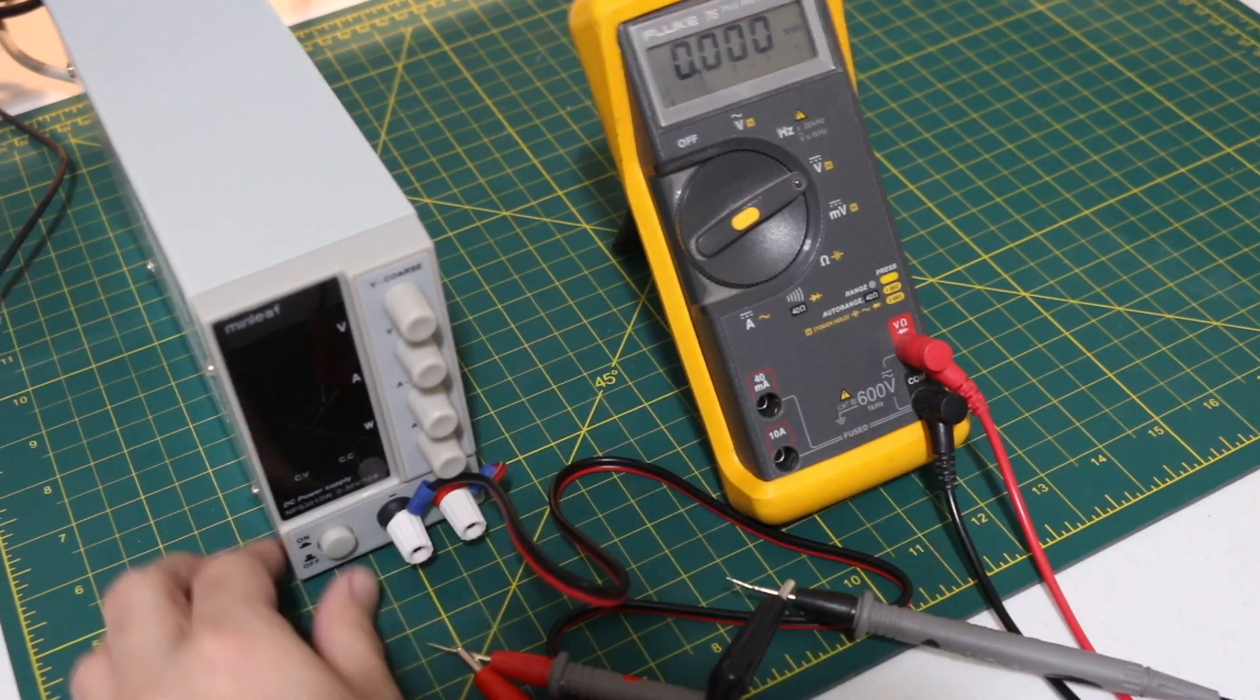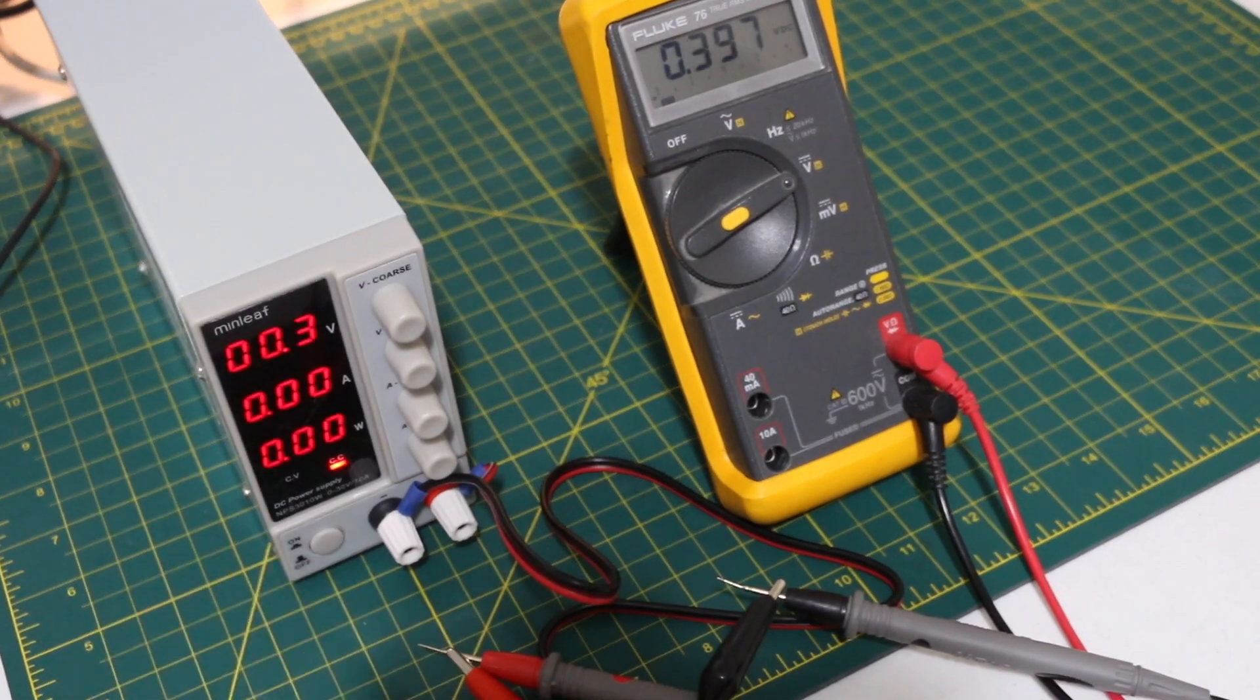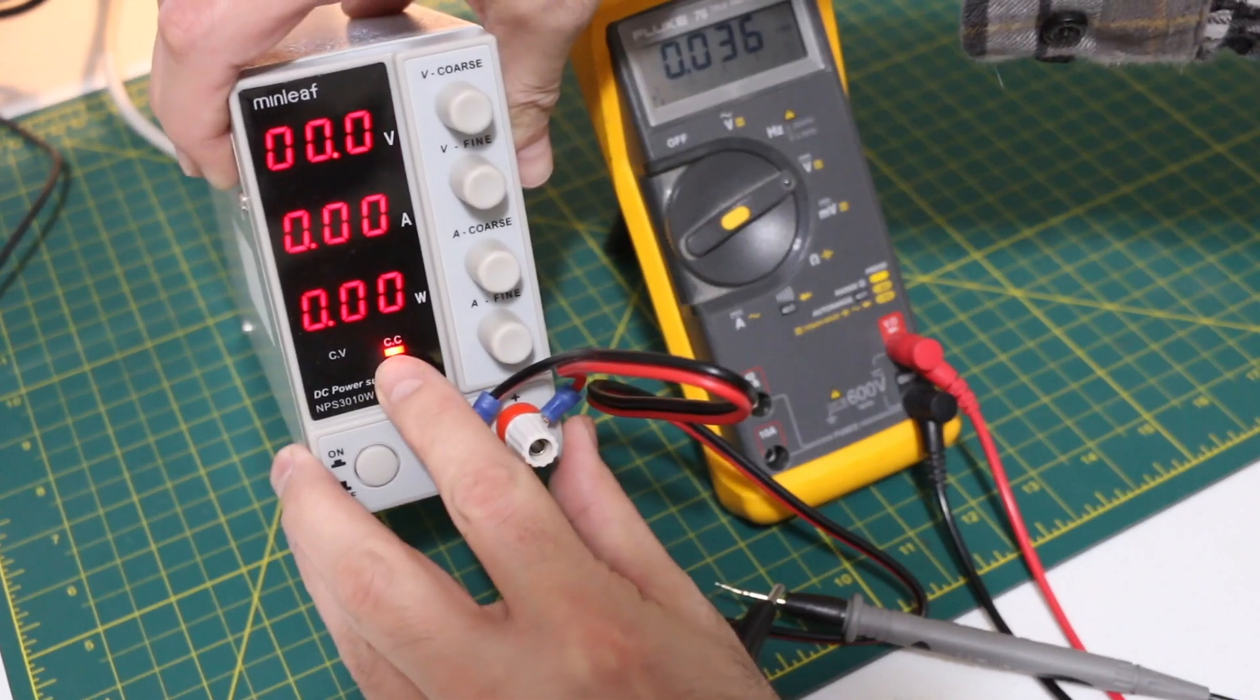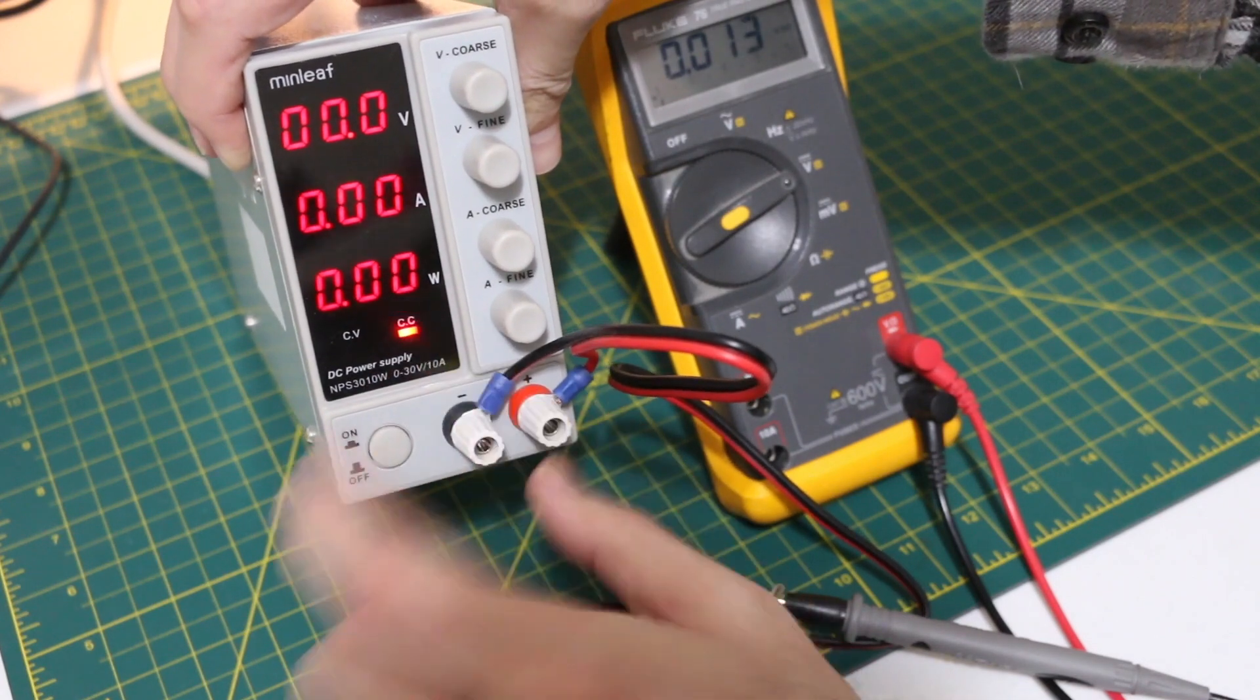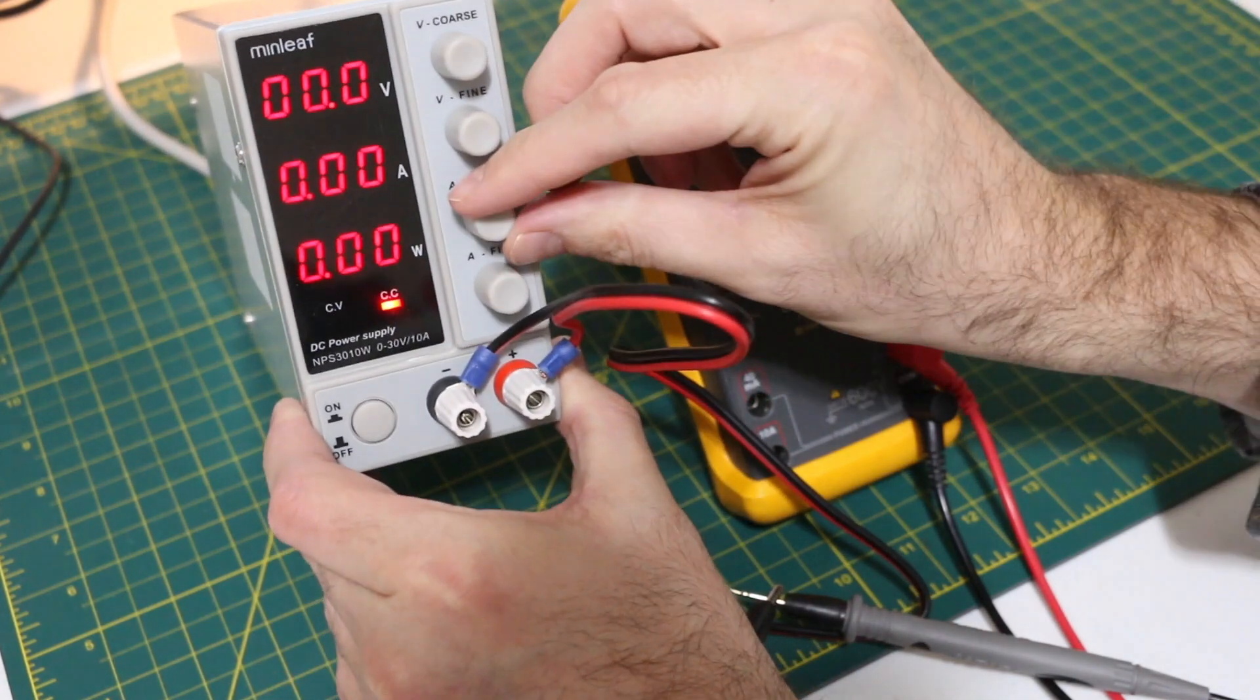Start with voltage on minimum, current on minimum, power it up and we start out in constant current mode because we have no current enabled. Turn that up a bit and we go into regular constant voltage mode.